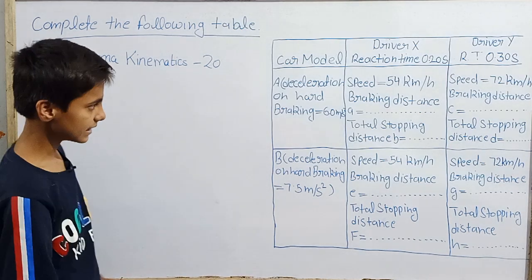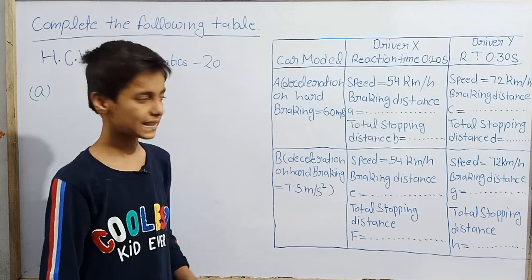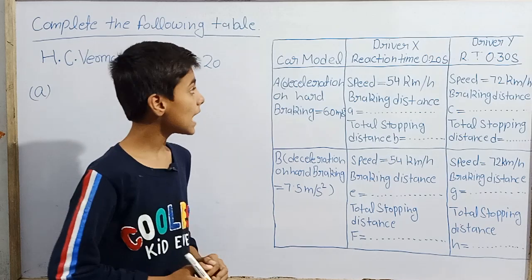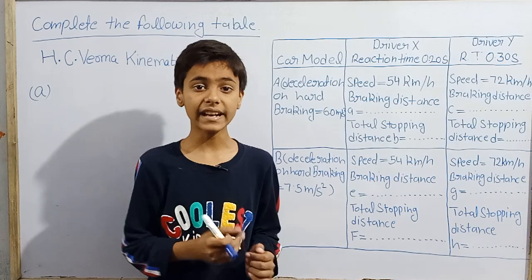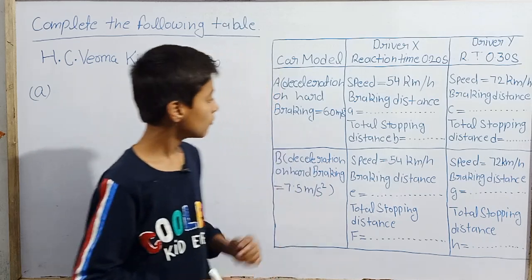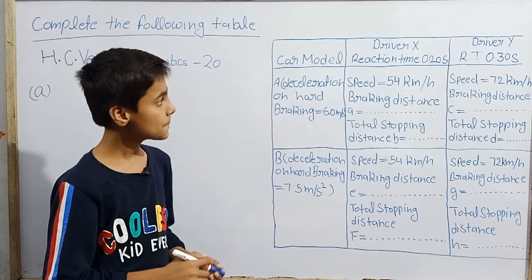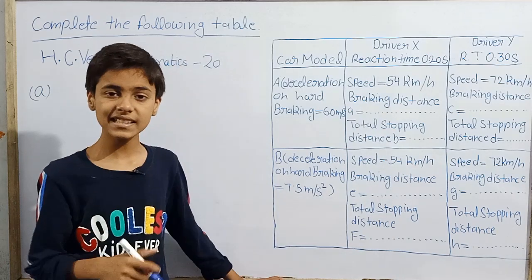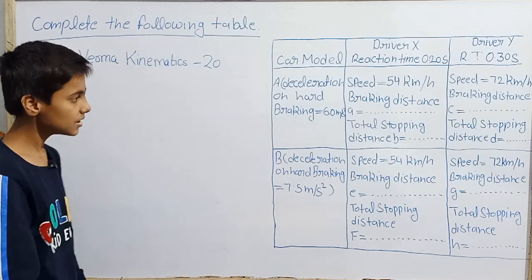First, let's understand the difference between braking distance and total stopping distance. Braking distance is the distance traveled after the driver applies the brake until the car stops. Total stopping distance includes the distance traveled during the reaction time — 0.20 seconds in this case — plus the braking distance after the brake is applied.